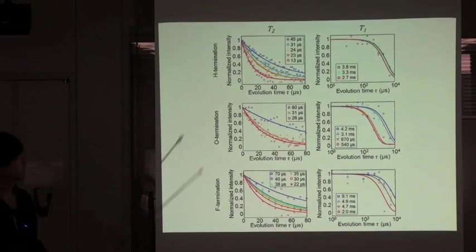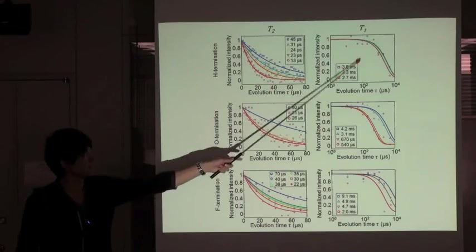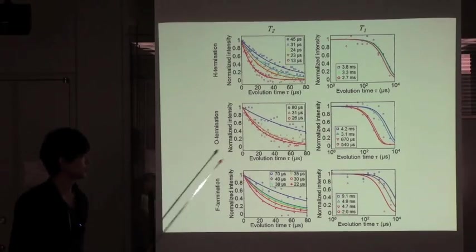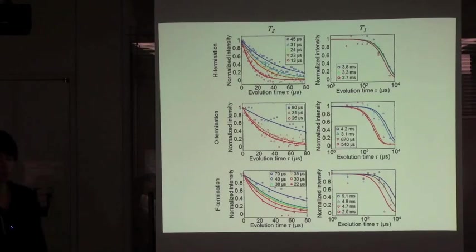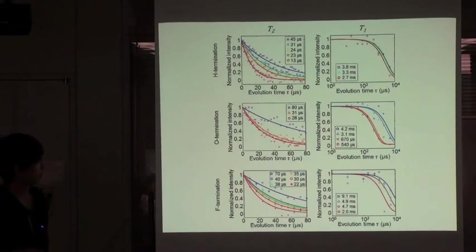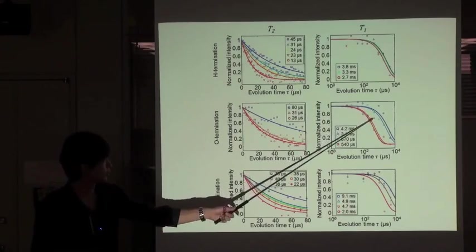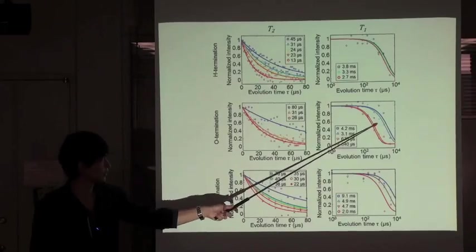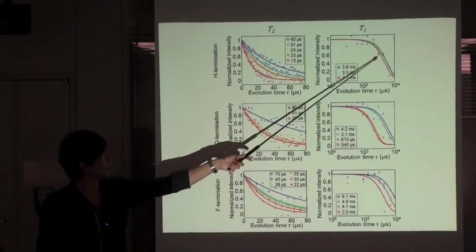We did T2 measurement and T1 measurement of each termination, H, O, F termination. The point is that the T1 value of O termination and F termination have a large spread compared to H termination.